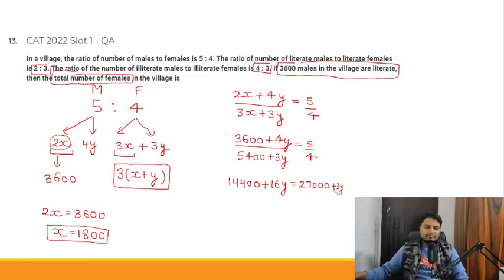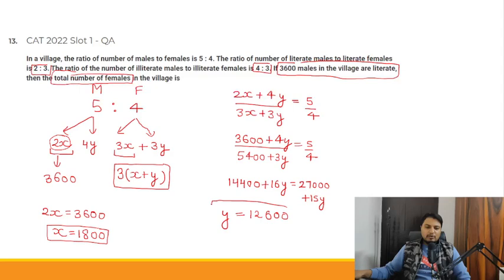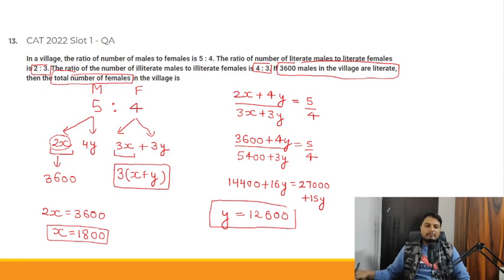From 14400 + 16y = 27000 + 15y, subtracting 15y from both sides: 16y - 15y = 27000 - 14400, so y = 12600. We now have x = 1800 and y = 12600.